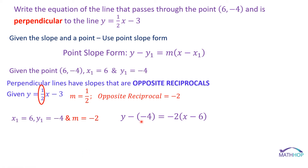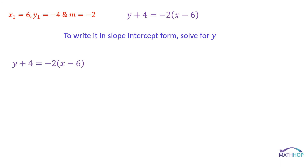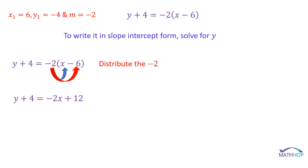Let's not leave y minus negative 4 — write y plus 4 equals negative 2 times the quantity x minus 6. To write this in slope-intercept form, distribute: negative 2 times x is negative 2x, and negative 2 times negative 6 is positive 12. We get y plus 4 equals negative 2x plus 12. Subtract 4 from both sides and we get y equals negative 2x plus 8, written in slope-intercept form.